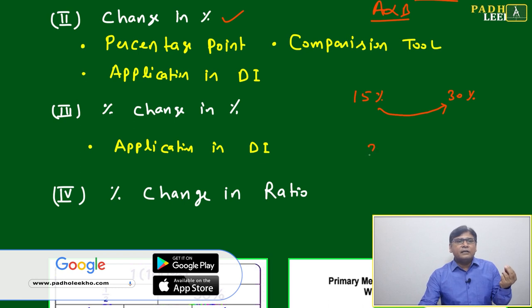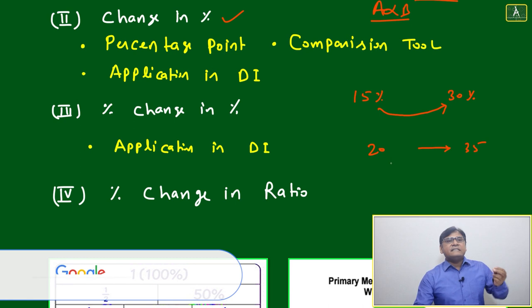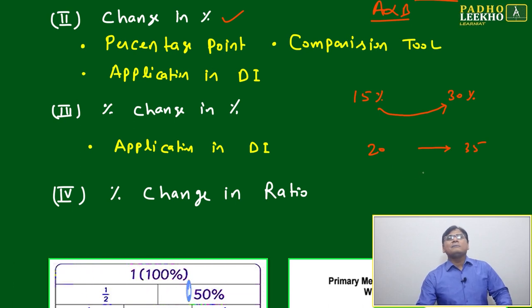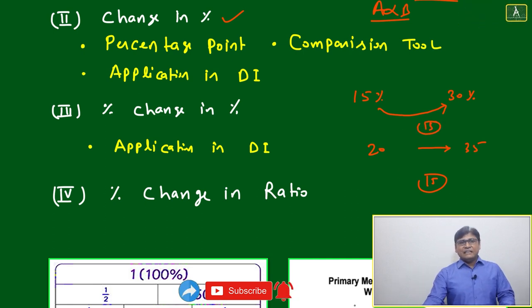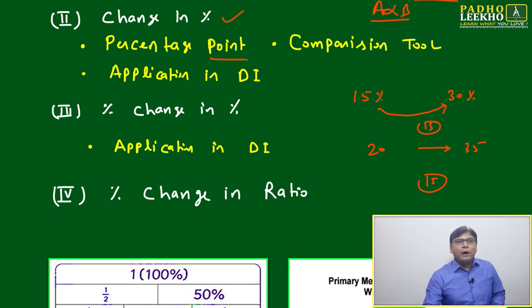Like we were saying earlier, 20 to 35—both are absolute numbers, so change in number is final minus initial, which equals 15. Same way, change in percentage: 30 minus 15 equals 15. But we can't say 'a percentage'—it's not in percentage. We say it is a percentage point.